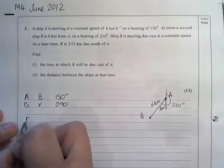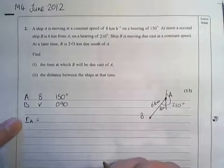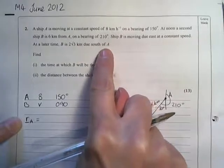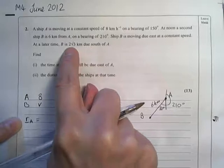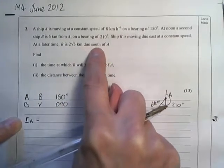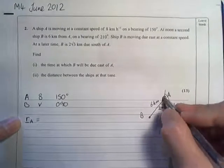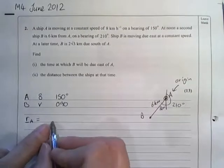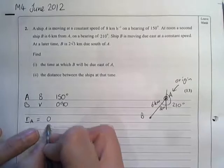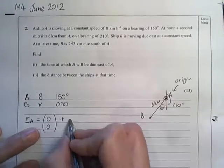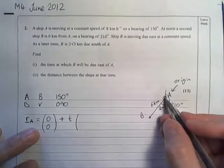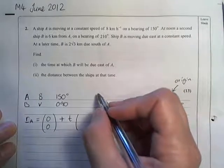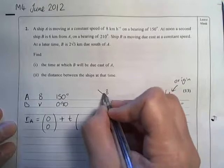I'll begin by writing down an expression for A's position. If we do everything relative to A, basically I'll make A the origin. Then A's position at time t will be where it was in the beginning, which was (0,0), plus t multiplied by A's velocity.